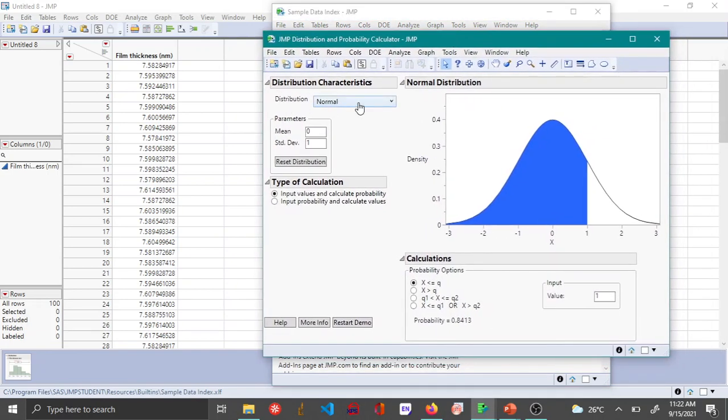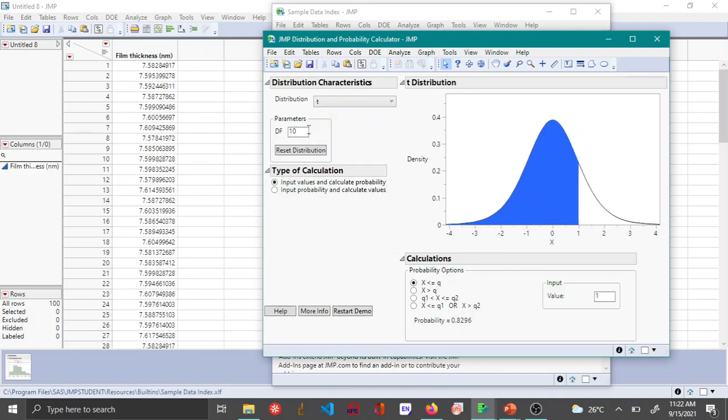In the distribution calculator you can change the distribution to t, and here degrees of freedom is the number of samples minus 1. In this particular example there is 100 minus 1, so the degrees of freedom will be 99.